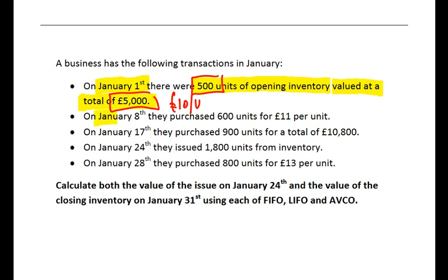On January the 8th, there are further purchases of 600 units. When you purchase inventory, that's going to increase the amount you're holding, and the price of those purchases on the 8th is £11 per unit. January the 17th, we've got further purchases of 900 units — another increase in inventory — with a total of £10,800. Notice that sometimes purchase information is given per unit and sometimes in total, so we need to be able to deal with both.